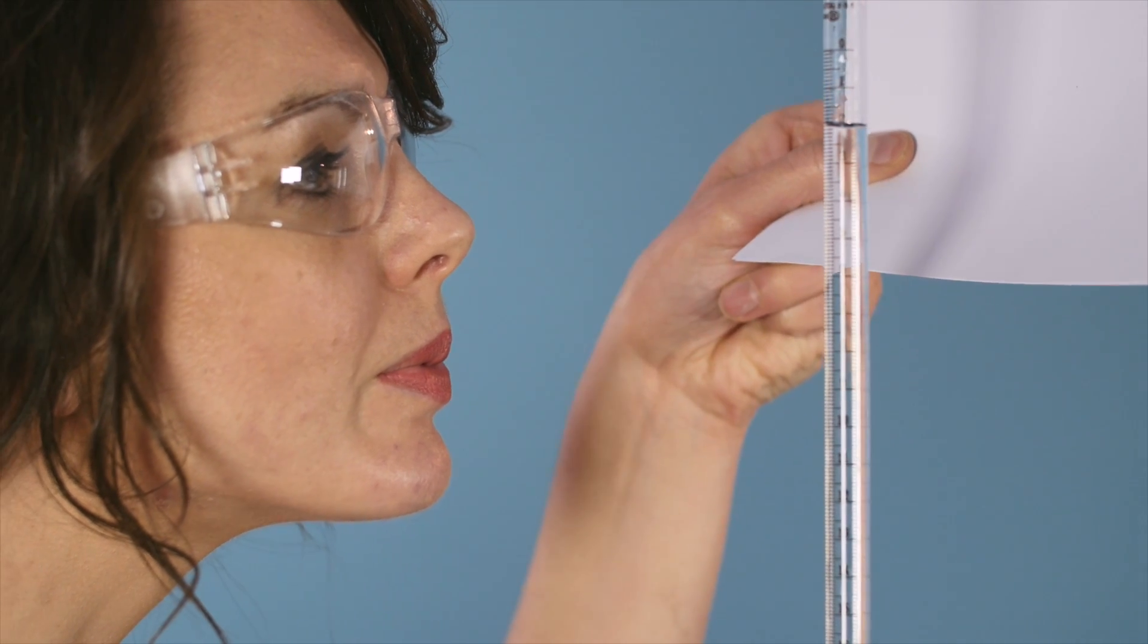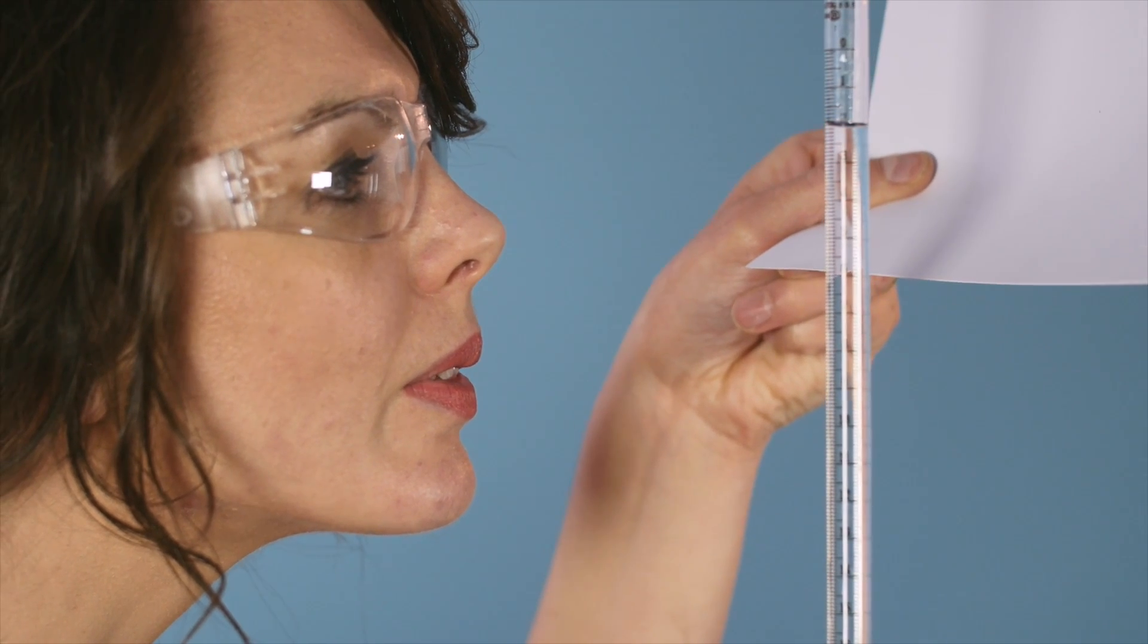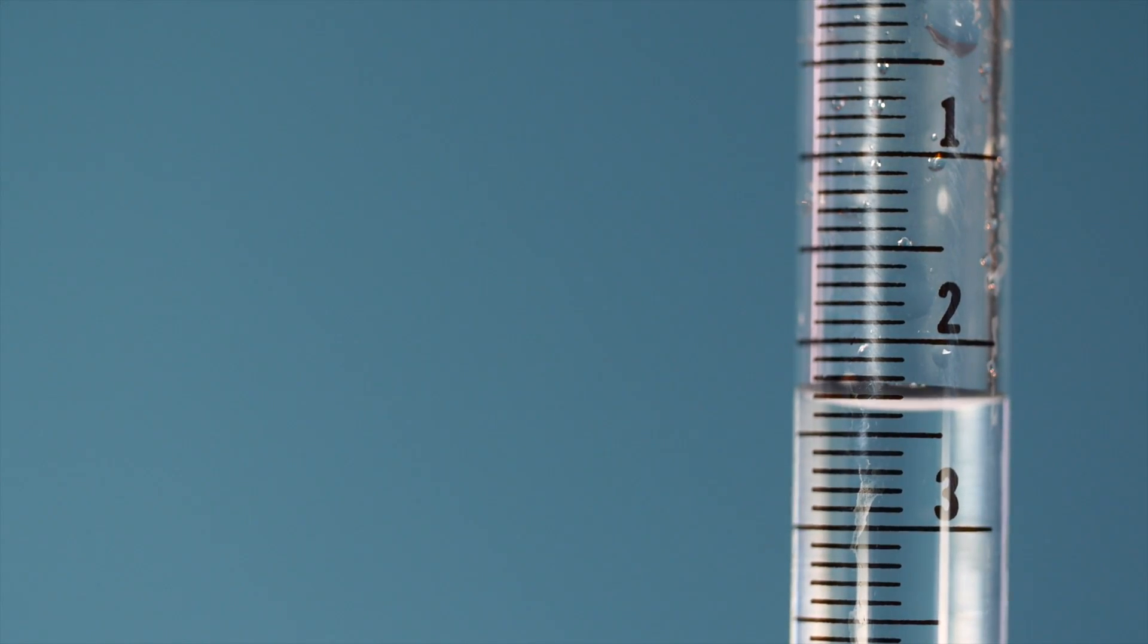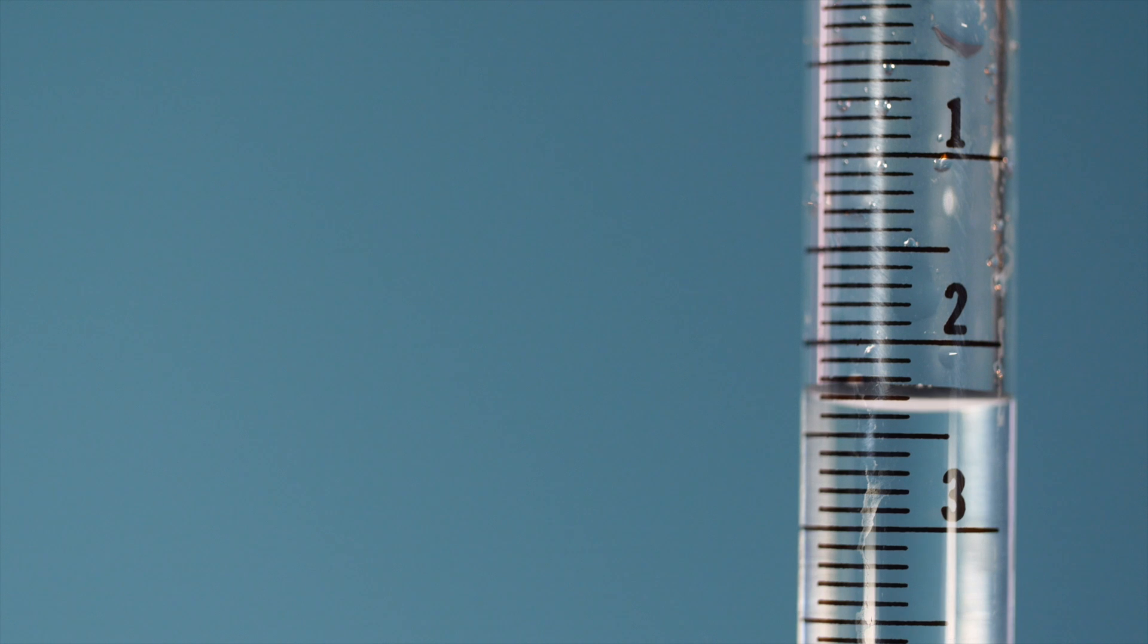Next, you will need to record the level of the solution in the burette. It can be tricky to see the meniscus clearly. It helps to hold a piece of white card behind the burette so that it lights up the bottom of the meniscus. Take the first burette reading with the meniscus at eye level. Take a reading from the bottom of the meniscus to the nearest 0.05 cm³. Make a note of the reading.